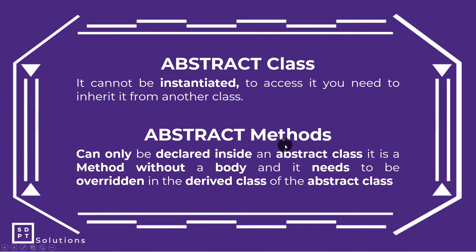Balik tayo sa abstract methods. Kailangan lang nasa loob siya ng abstract class, at ito yung method na walang body — wala siyang curly braces, wala siyang laman. Pangalan lang na method, tapos wala na. Kailangan nyo na mag-override sa kanya dun sa derived class. So pagka in-inherit natin yung abstract class, lahat ng abstract method ng abstract class na yun dapat i-override natin dun sa ating class na ginawa. Mamaya mas mag-gets nyo yan pagka nakita na natin sa code.